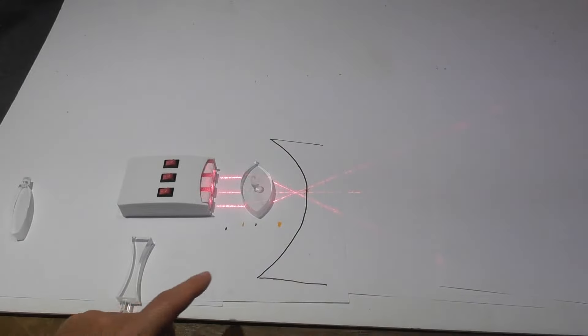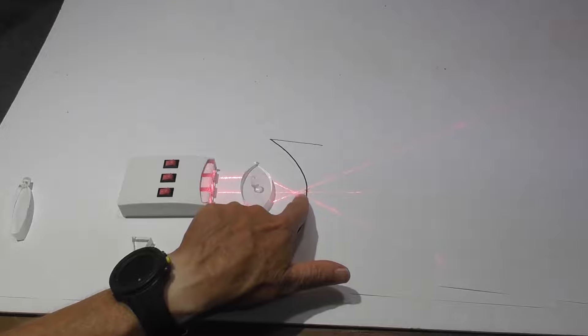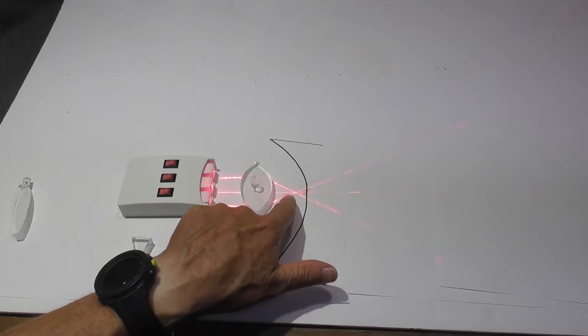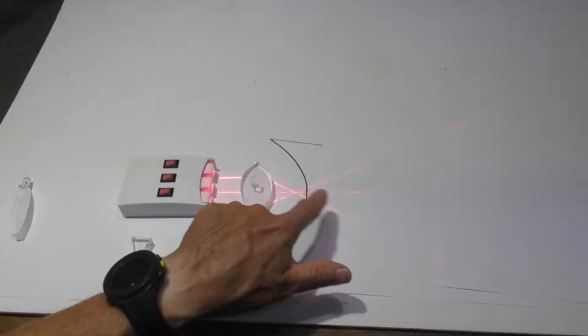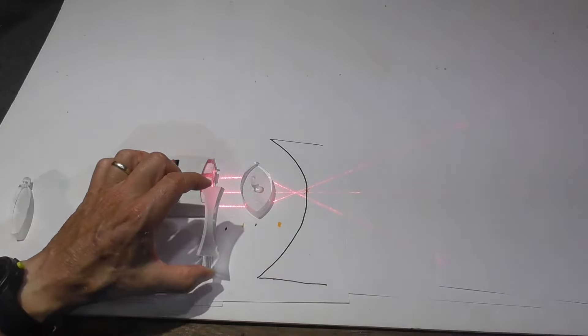With nearsightedness, you have the opposite. You can see that the light is focused in front of the retina. When you are nearsighted, you can see objects that are near but struggle with objects that are far. You can use a concave lens.